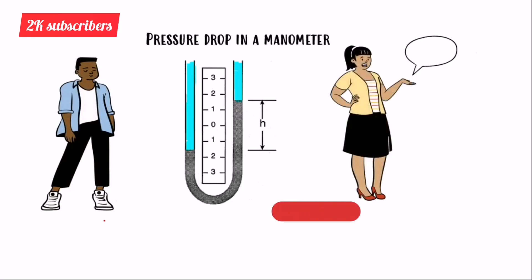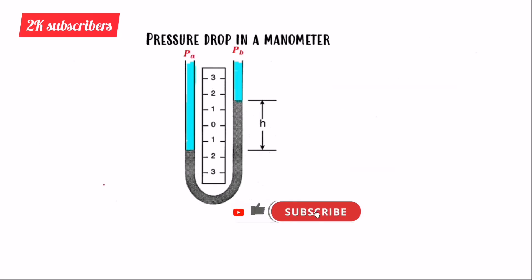I'm going to explain this in a clear way. When a question asks us to find pressure drop, we need to apply the principle that pressure at the same level or the same point is equal. So we label two points — point one and point two — and we know that pressure at point one equals pressure at point two.